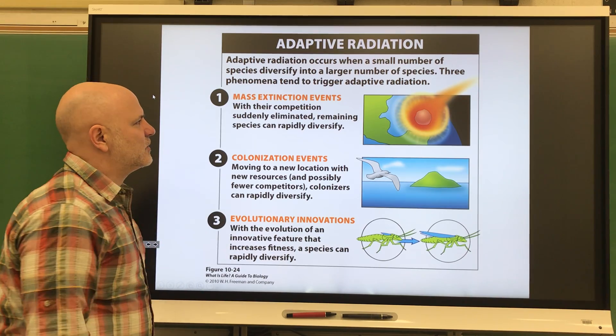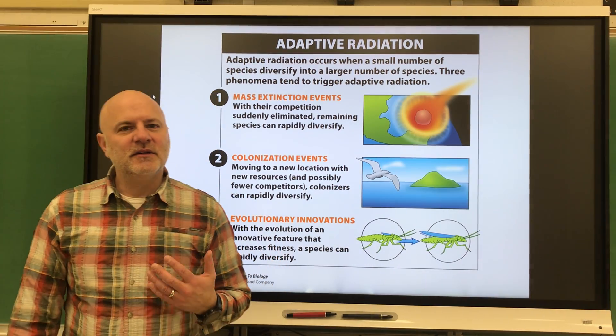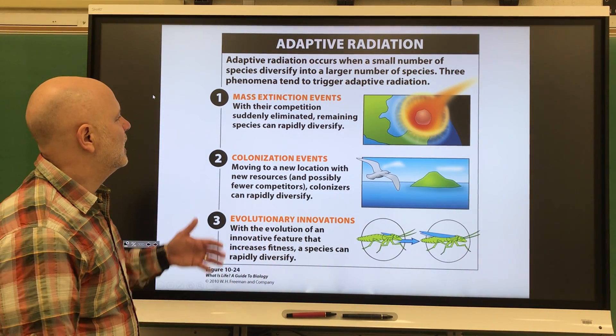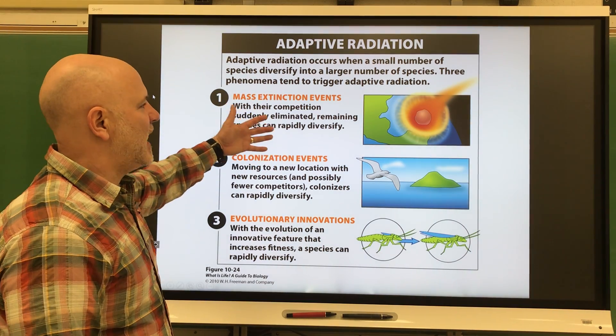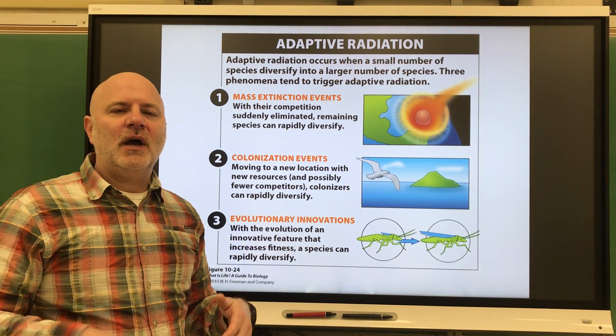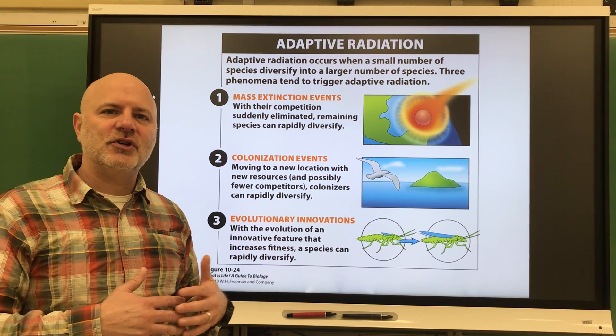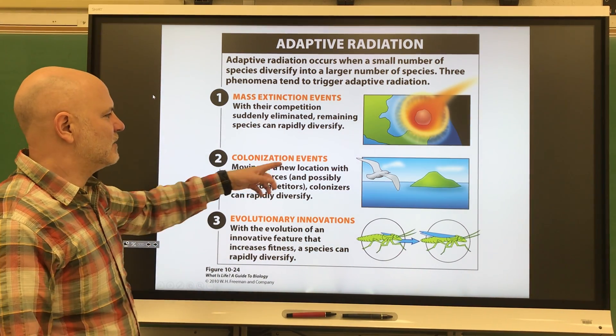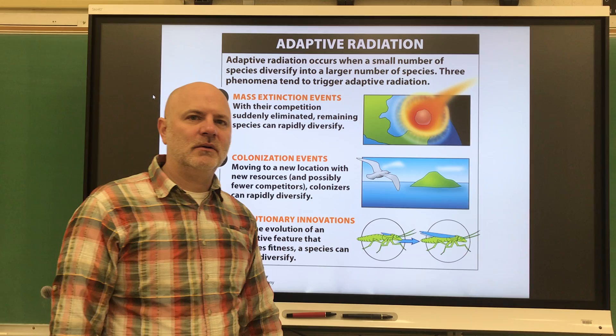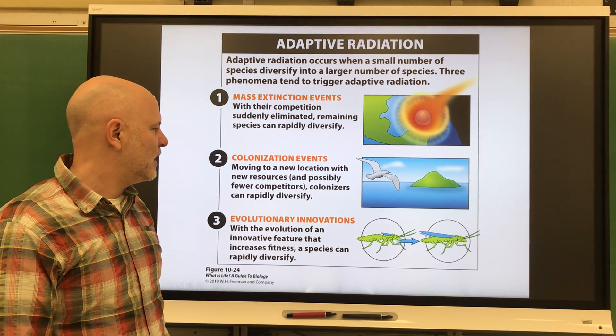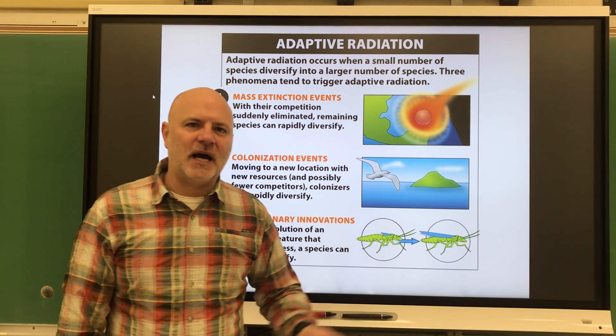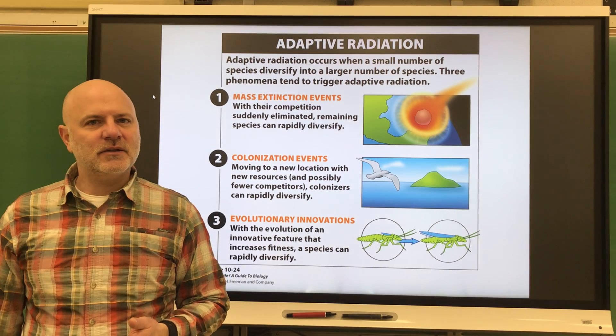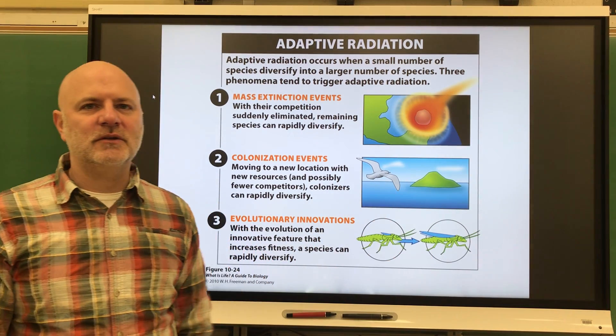One of the things that works with this is adaptive radiation, the emergence of several species from a common ancestor that's introduced to a new and diverse environment. This can occur after a mass extinction - like when the dinosaurs died off, mammals underwent an adaptive radiation because there's all these habitats now open to them. Another is colonization events, like flying to a new island that doesn't have your species there. Or evolutionary innovation - we have a lot of different kinds of insects, and the development of wings has really led to a lot of that diversification.